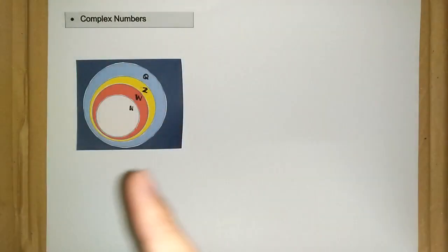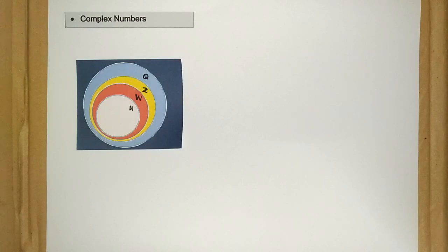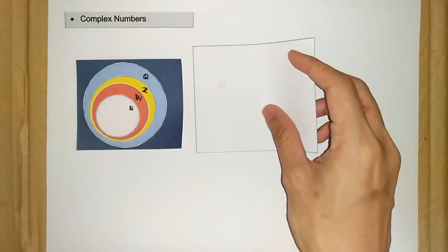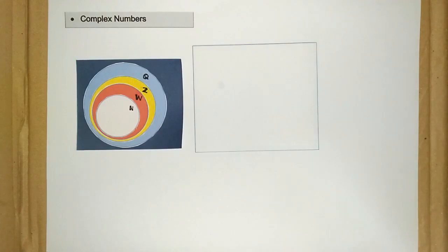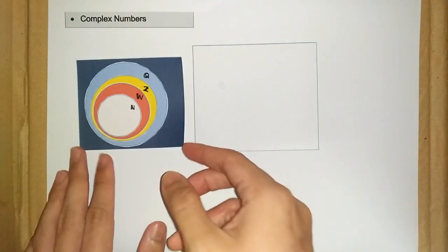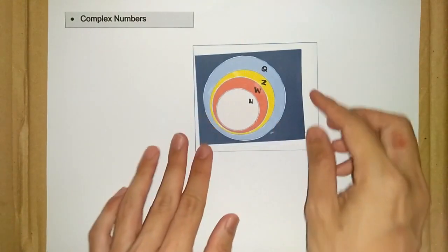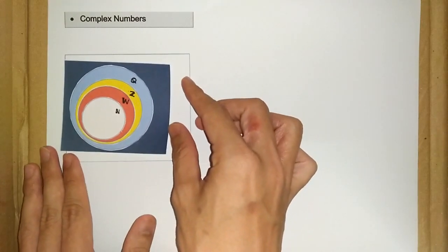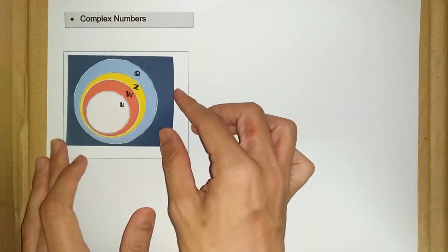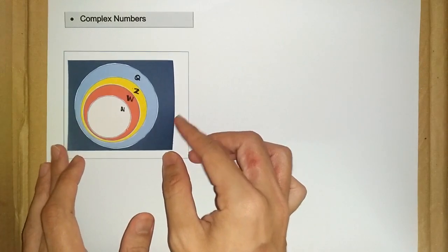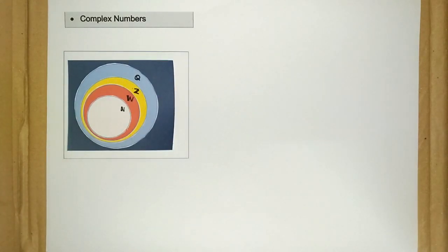it seems like real numbers is the biggest set that we have ever encountered. The question is, is there any other set that is bigger than real numbers? The answer is yes — there is a set that is bigger than real numbers, and this is what we call complex numbers. Complex numbers is bigger than real numbers, and real numbers is just the subset of complex numbers. We denote complex numbers with capital C.